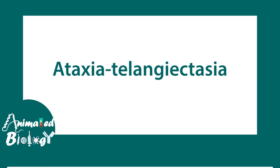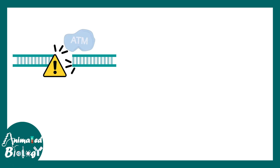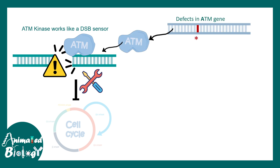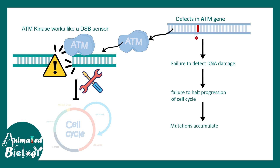The next disease is ataxia telangiectasia. ATM — ataxia telangiectasia mutated — is a kinase that can recognize double-stranded DNA breaks. This enzyme is a sensor for double-stranded DNA breaks; it can trigger a pause in the cell cycle and recruit repair machinery to the break site, attempting to repair it and resume the cell cycle. When there is a mutation in the gene encoding ATM, there is failure at detecting DNA damage — especially double-stranded DNA breaks — failure to halt cell cycle progression, and mutations accumulate, creating problems in the development of immune cells.